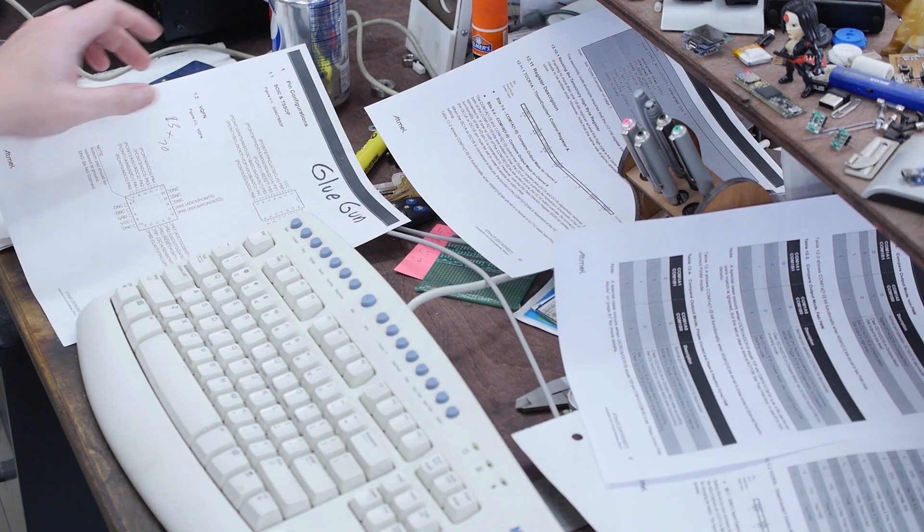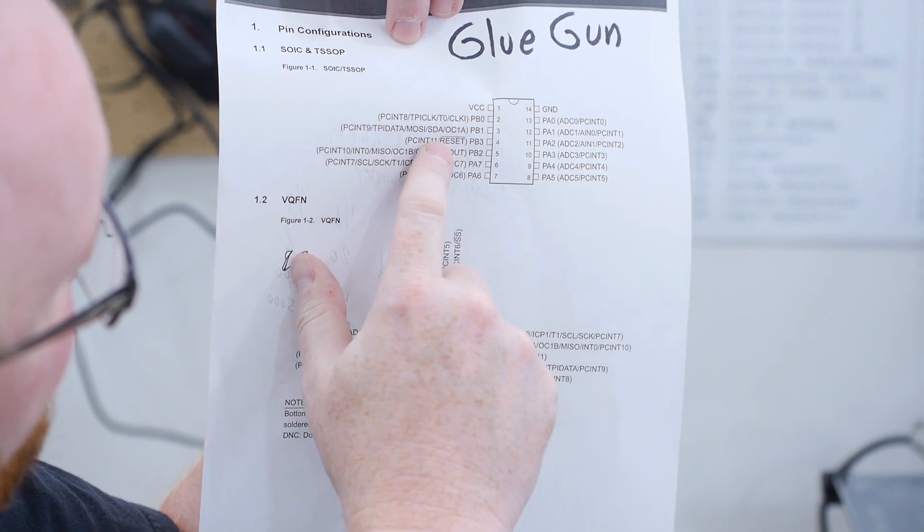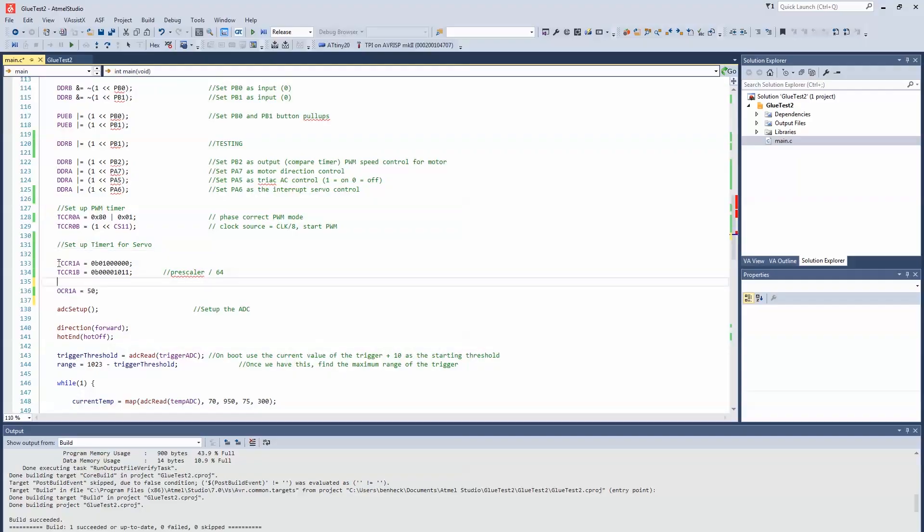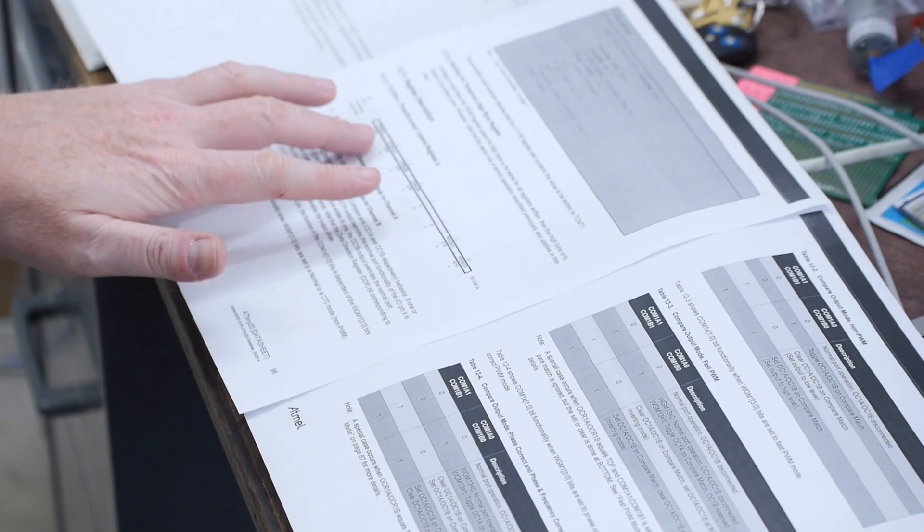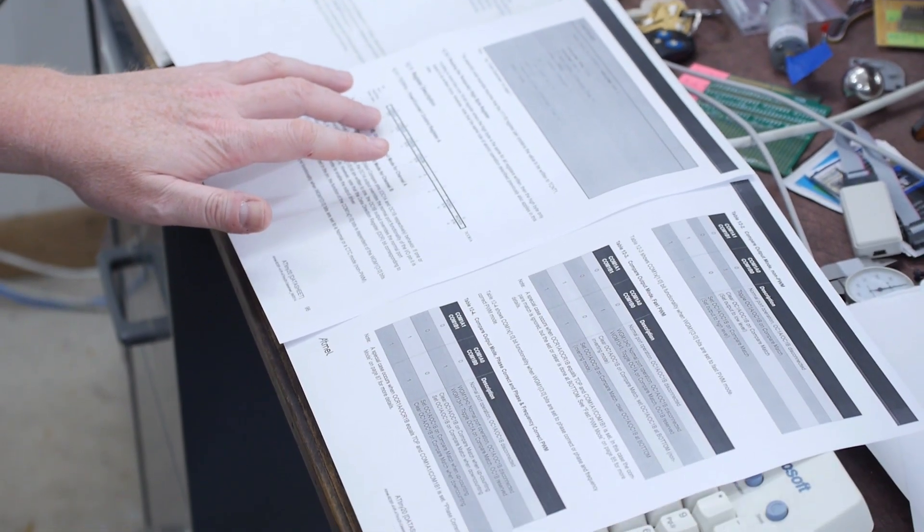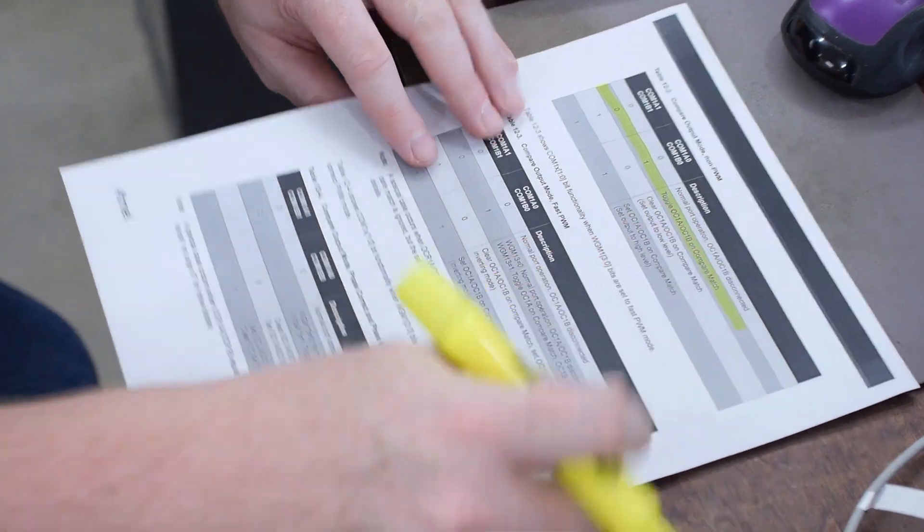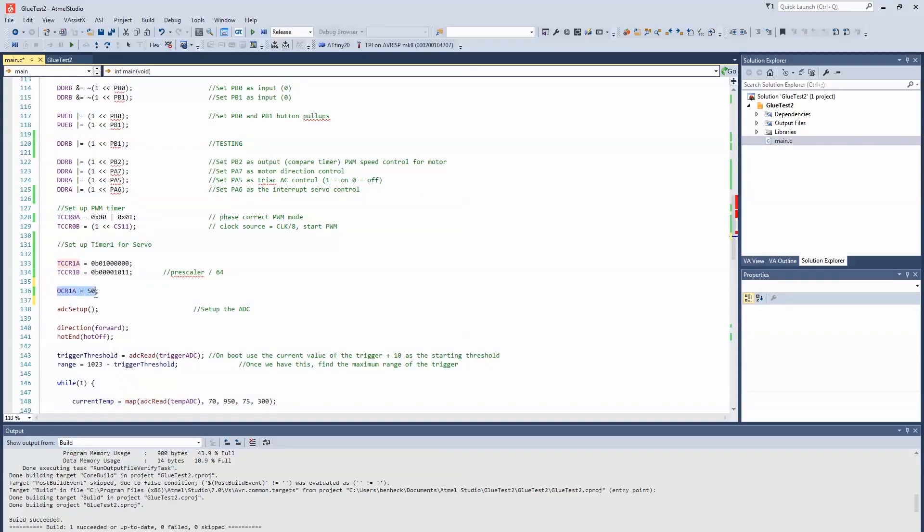We're already using timer zero to control the motor, so we have to use the other timer, which is timer one. But I was looking into how to set up the bits for this, and I was a little confused. So here is the chip diagram. Timer zero is on PB2, and that's the motor PWM control. Now, it's pretty easy just to toggle a pin. See how we have OC1A on PB1? That's an output compare pin for timer one. So check this out. We have a timer one register, and we've set that. And you have to kind of combine these bits together to make this work.